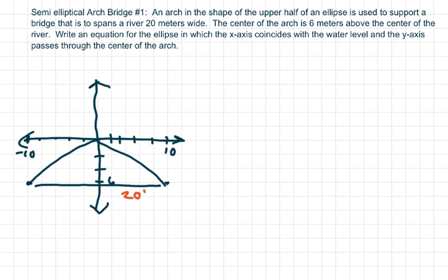Hi everyone, we're going to do a semi-elliptical arch bridge problem number one. We have an arc in the shape of the upper half of an ellipse used to support a bridge that's going over a river. The center of the arc is six meters above the center of the river.